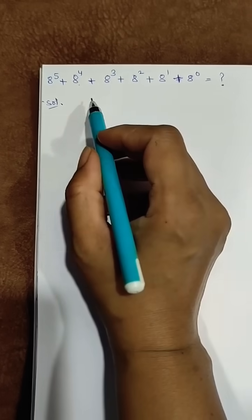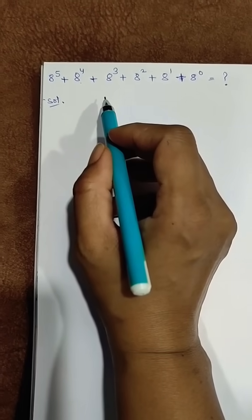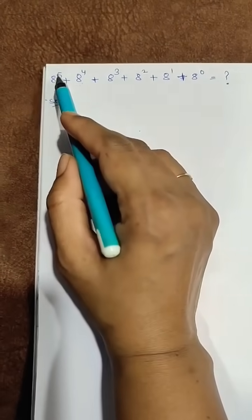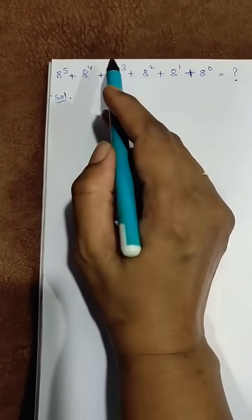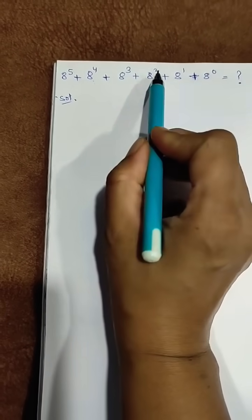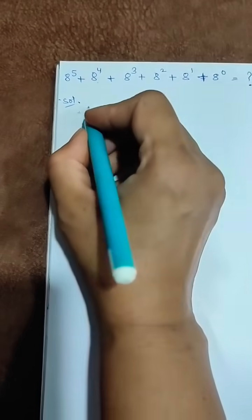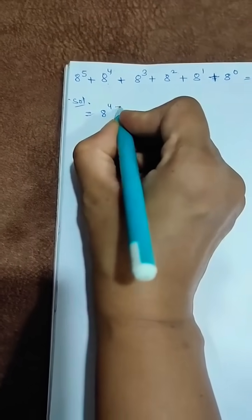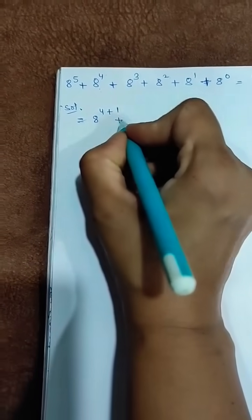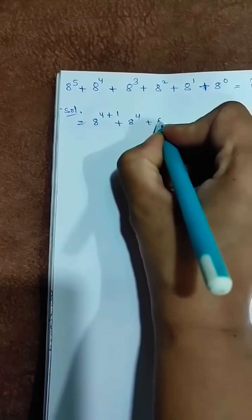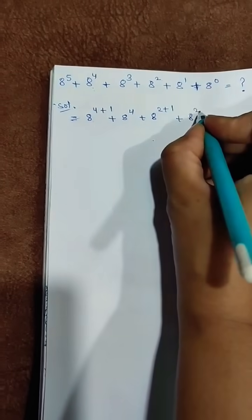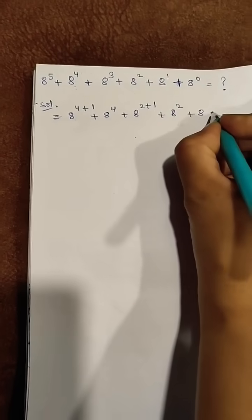How to solve this complex question from the chapter exponents and powers. We can break 8 raised to the power 5 in terms of 8 raised to the power 4, and 8 raised to the power 3 in terms of 8 raised to the power 2, like 8 raised to the power 4 plus 1, plus 8 raised to the power 2 plus 1, plus 8 raised to the power 2 plus 8 plus 1.